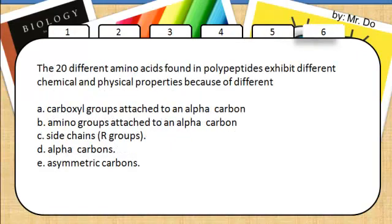6. The 20 different amino acids found in polypeptides exhibit different chemical and physical properties because of different... The R groups.